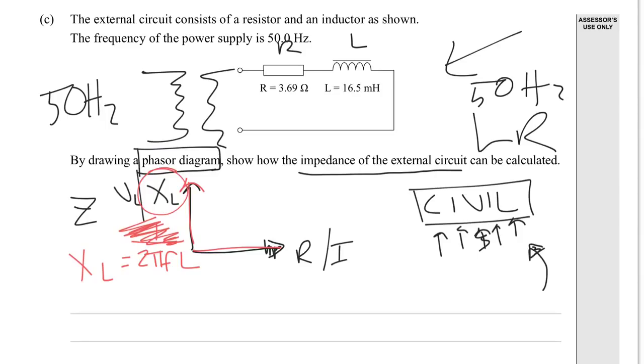You've been given your resistance there. And from that, you can do your calculation. That's XL. Just shift it across to the side to find your Z value. Use a bit of Pythagoras.